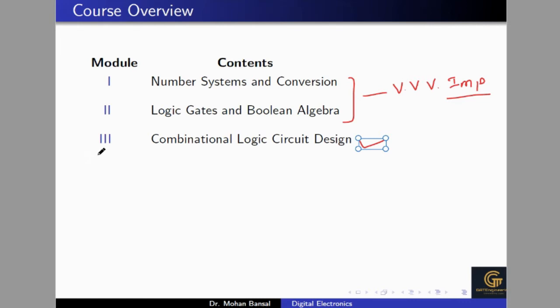In combinational logic circuits we will cover binary adders and subtractors: half adder, full adder, half subtractor, and full subtractor. After that we will cover encoders and decoders. We will discuss multiplexers and demultiplexers, and design functions using decoders and multiplexers — for which you need to know K-map and expression minimization. We will also discuss ripple carry adders, subtractors, and magnitude comparators.